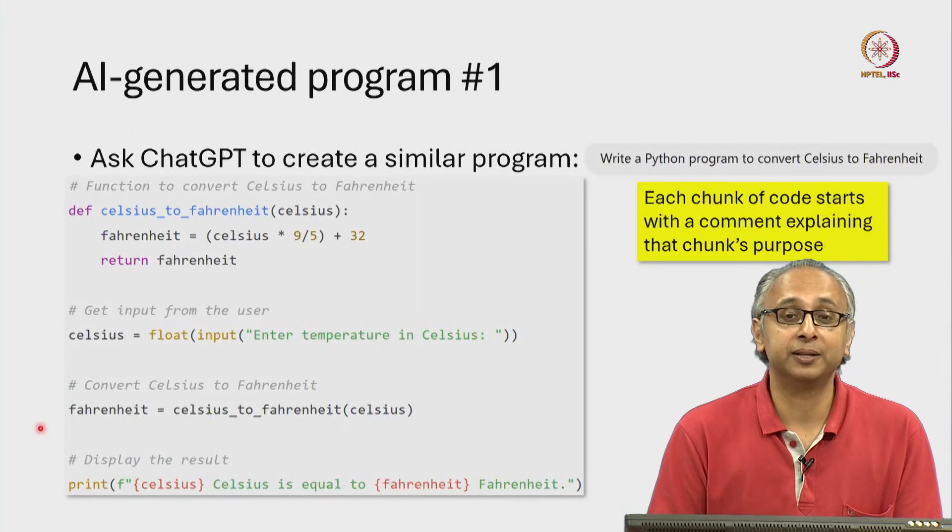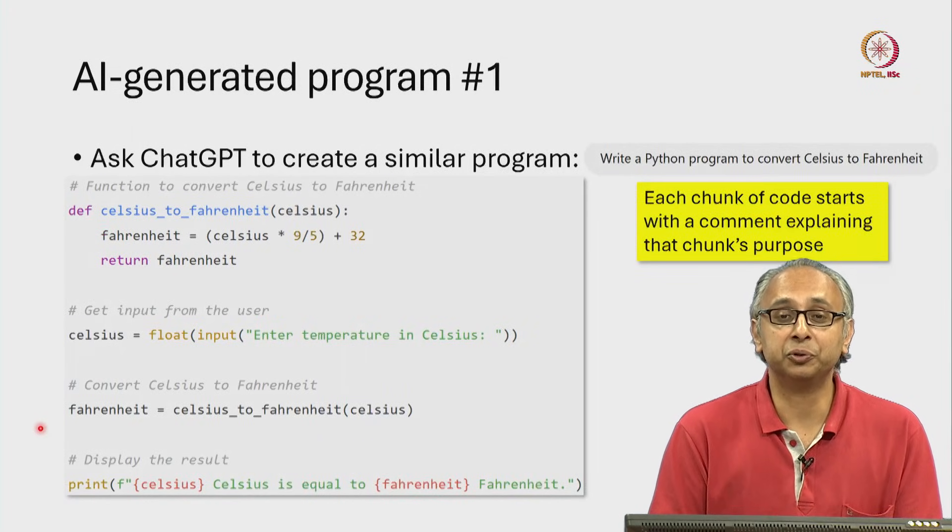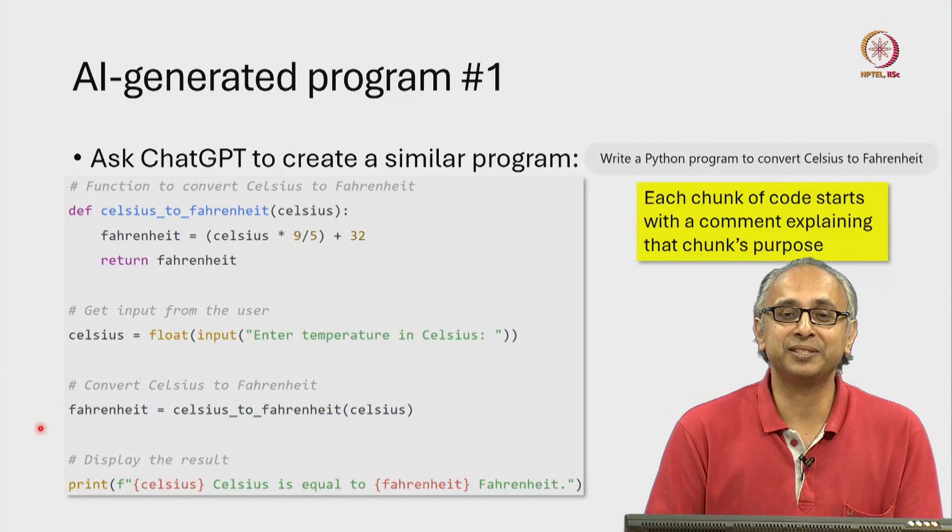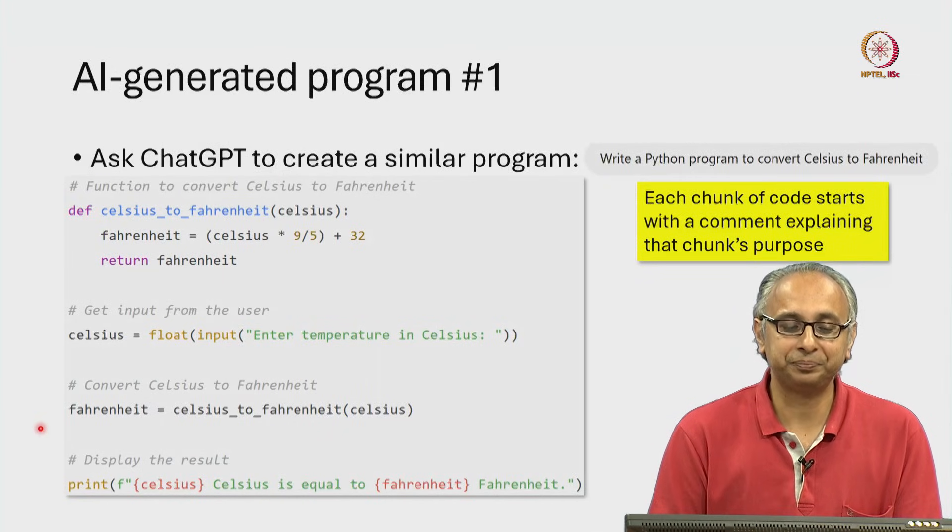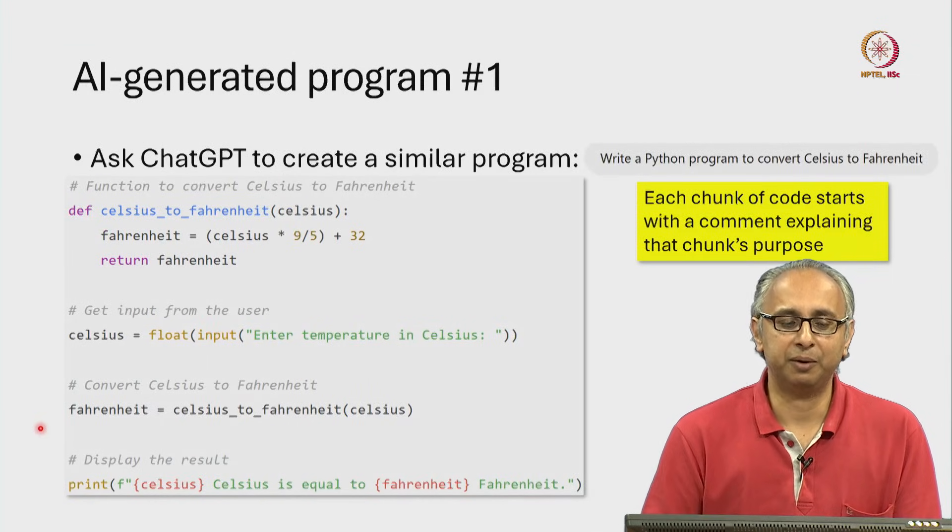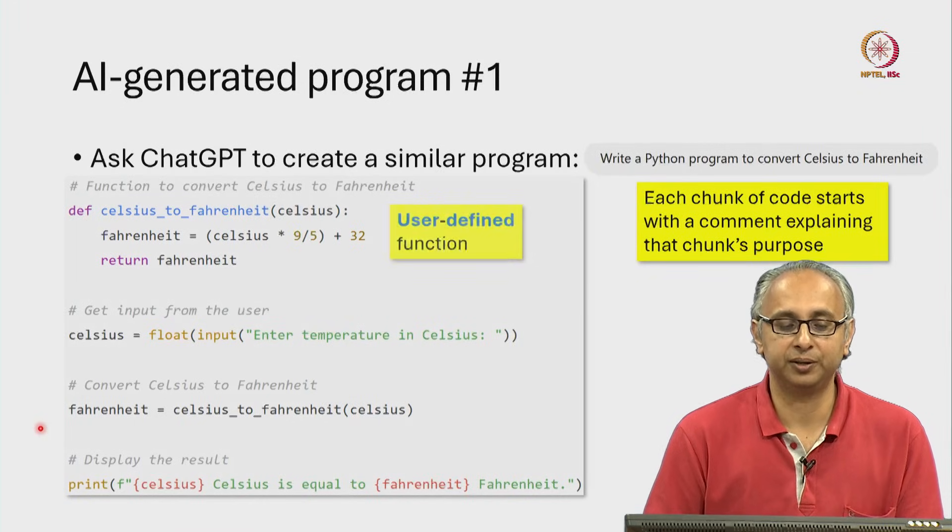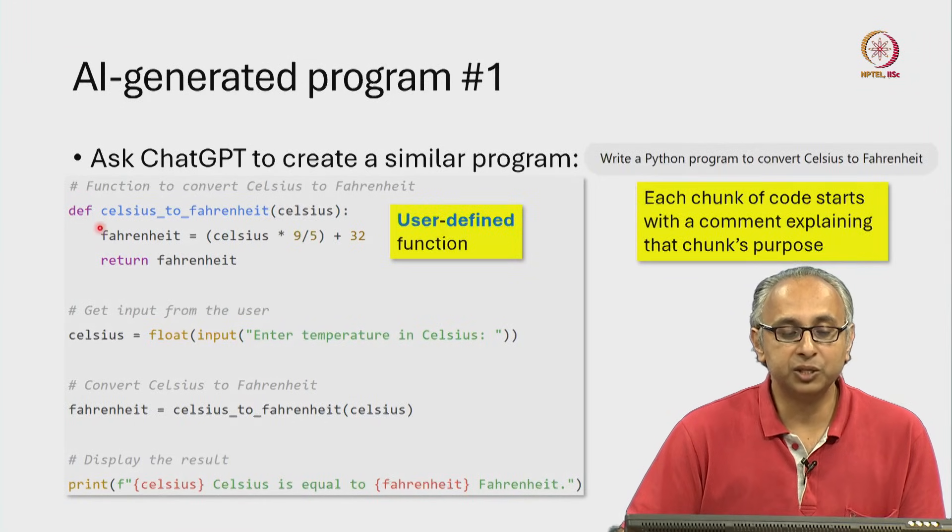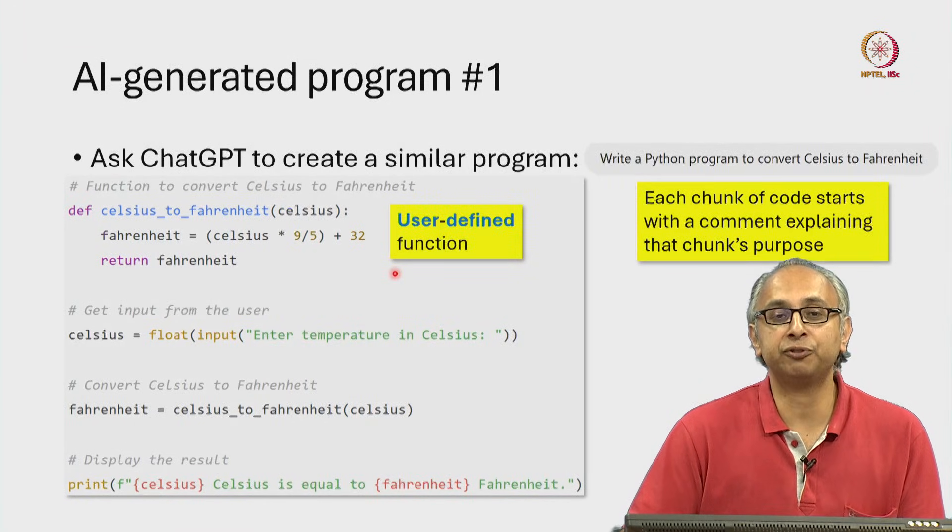In any case, you will often find that AI generated code does follow good programming style and that makes it easier for us to read it. The second thing I want you to observe is this first chunk. This is what we call a user defined function.